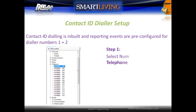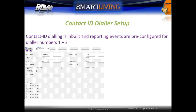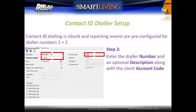Contact ID dialing is inbuilt and reporting events are pre-configured for dialer numbers 1 and 2. To configure, first select number 1 from the telephone tree. Next, enter the dialer number and the optional description along with the client account code.